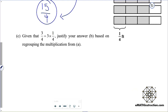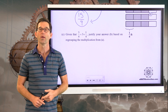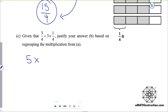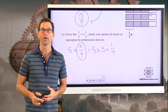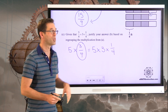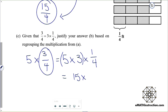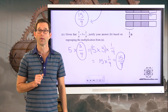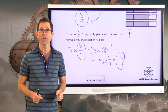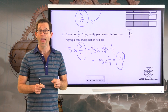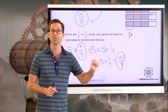Letter C says: given that three-fourths simply is three times one-fourth, justify our answer in B based on regrouping the multiplication from A. We know that what she has is five times three-fourths, but three-fourths itself is three times one-fourth. Multiplication has this fantastic property called the associative property, meaning that we can do the five times three first — that gives us 15 — and then 15 times one-fourth is simply by definition 15-fourths. If I've got five of three of something, I have 15 of that something. The something in this case is fourths, so I have 15-fourths.